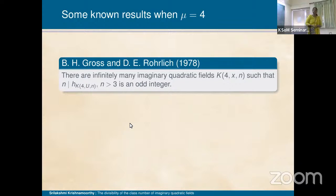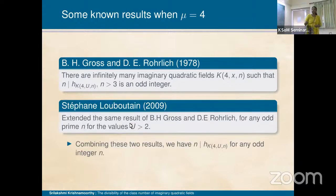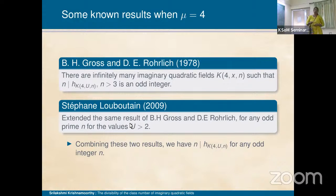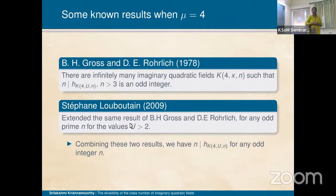This is the case when μ = 4. There is another result by Louboutin, who extended the result of Gross and Rohrlich for any odd prime and any value u strictly greater than 2. Combining these two results, we have divisibility: n divides the class number of K(4u, n) for any odd integer n.